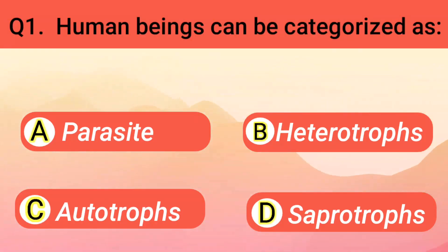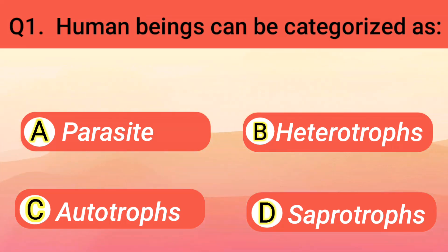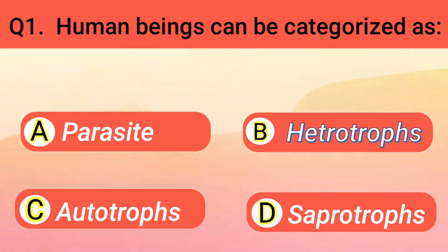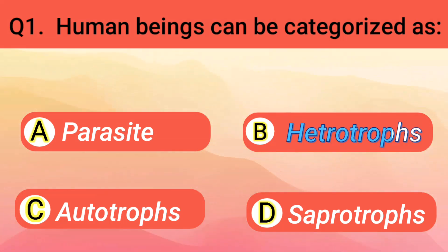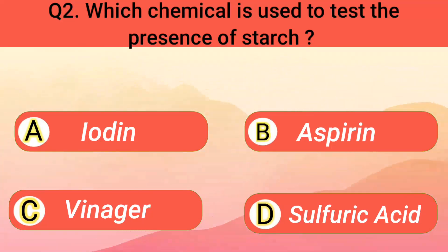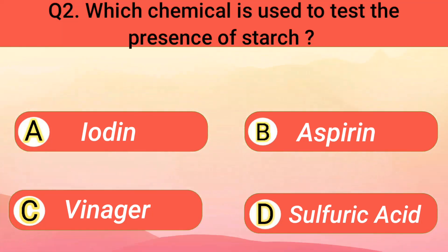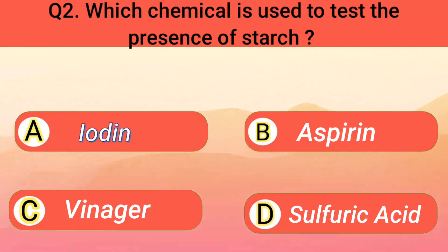Human beings can be characterized as heterotrophs. Which chemical is used to test the presence of starch? Iodine.